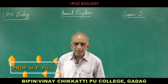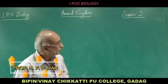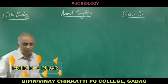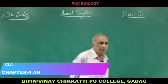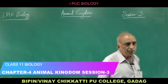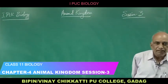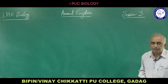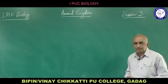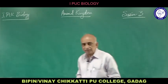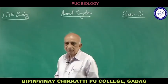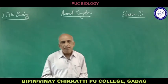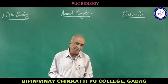In the animal kingdom, so far we have studied different phyla since the beginning: phylum Porifera, phylum Coelenterata, Ctenophora, Platyhelminthes, Annelida, Arthropoda, Mollusca, Echinodermata, Hemichordata and Chordata.